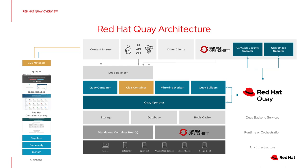Quay is a containerized product, which means it can run on nearly any containerized infrastructure. It can run on a standalone host with a container runtime, but of course it runs better on an orchestration platform. It effectively consists of Quay as a containerized application. Optionally you can use Clair the vulnerability scanner, the mirroring worker for repository mirroring, and the Quay builders for git build triggers. Typically in front of Quay and Clair you run a load balancer, and then you have your clients and UI and API commands connecting via the load balancer.